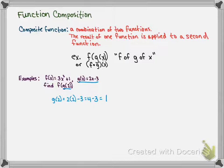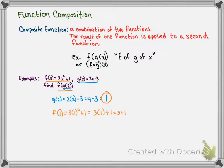Now we feed that 1 into the f of x function, finding f of 1. We take the f function and substitute 1 in for x: 3 times 1 squared plus 1. Since 1 squared is 1, we get 3 times 1 plus 1, which is 3 plus 1, equals 4. So f of 1 is 4. Therefore, f of g of 2 equals 4.